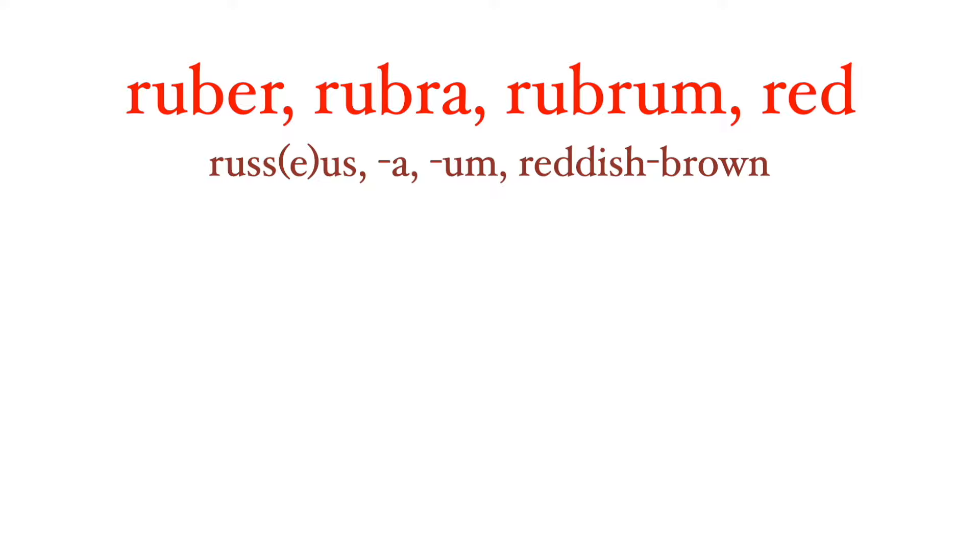Not in this list are the adjectives 'russus' and 'roseus,' a reddish-brown color like the color of hair, both of which are rare in classical Latin, even if they directly led to words for red like 'rojo' in Spanish.